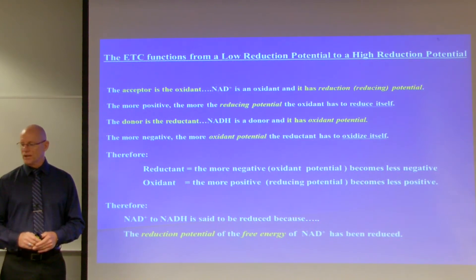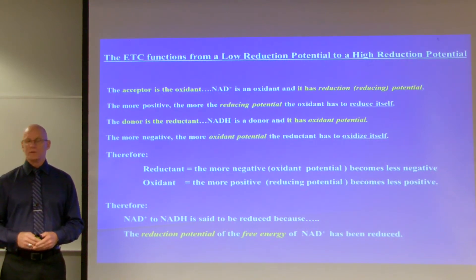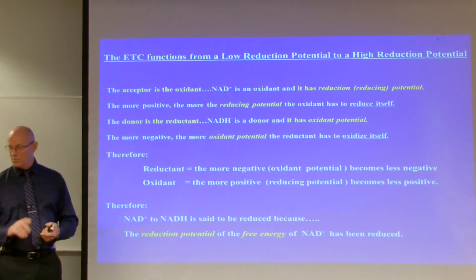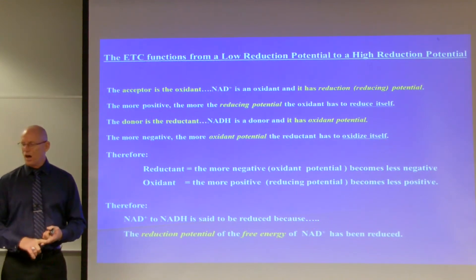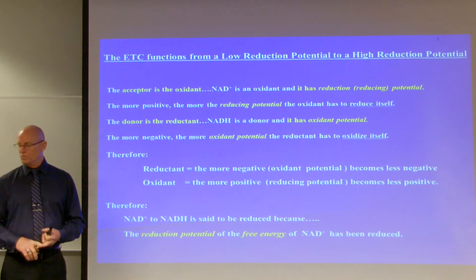The donor is the reductant. NADH is a donor and it has oxidant potential. The more negative, the more oxidant potential the reductant has to oxidize itself. Therefore, a reductant with more negative oxidant potential becomes less negative. An oxidant with more positive reducing potential becomes less positive.